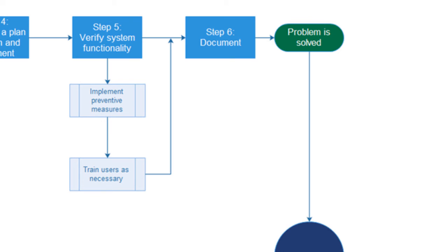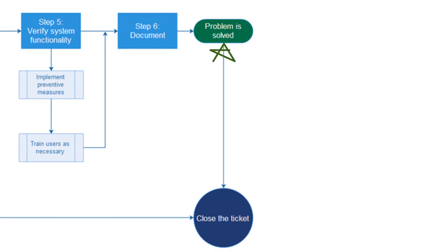And have everybody sign off on it as necessary. It could be you, it could be the user that was having the problem, it could be your manager, it could be a combination of all those. So document everything, and then the problem is solved. And you can close the ticket once everybody is signed off.